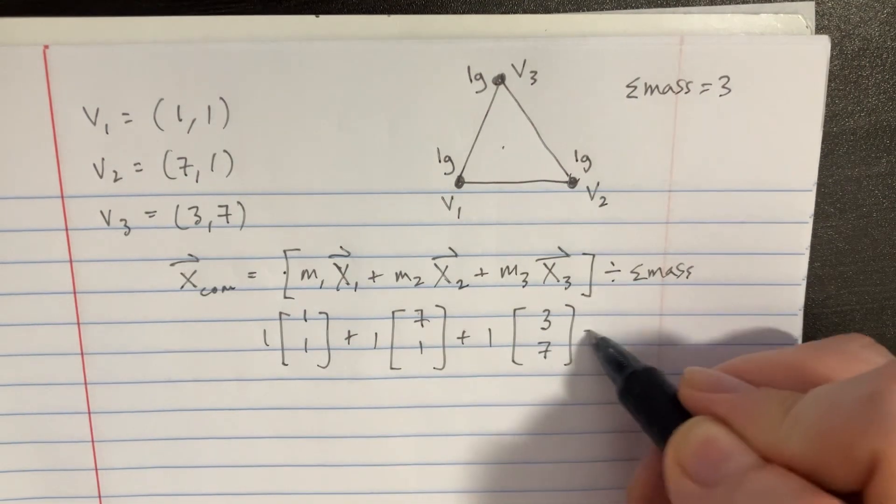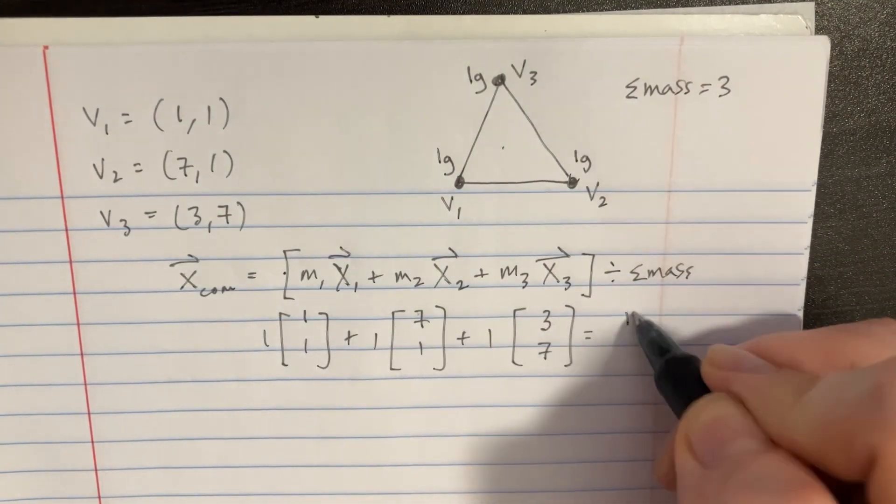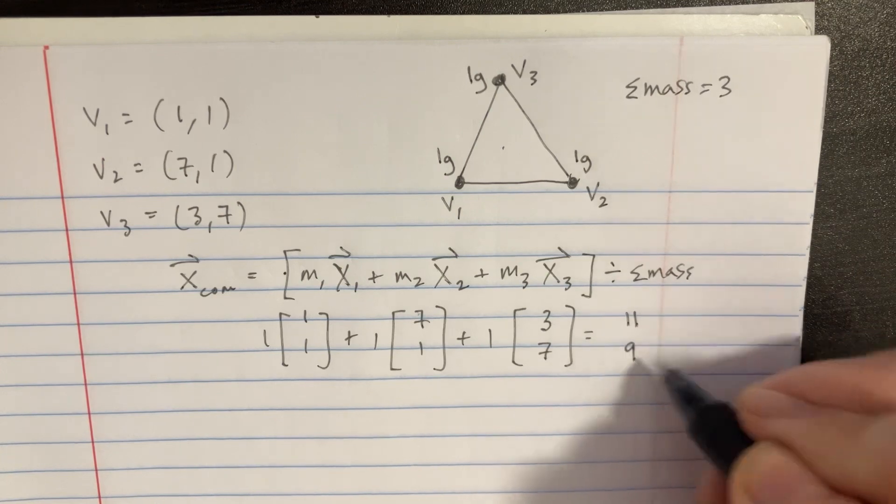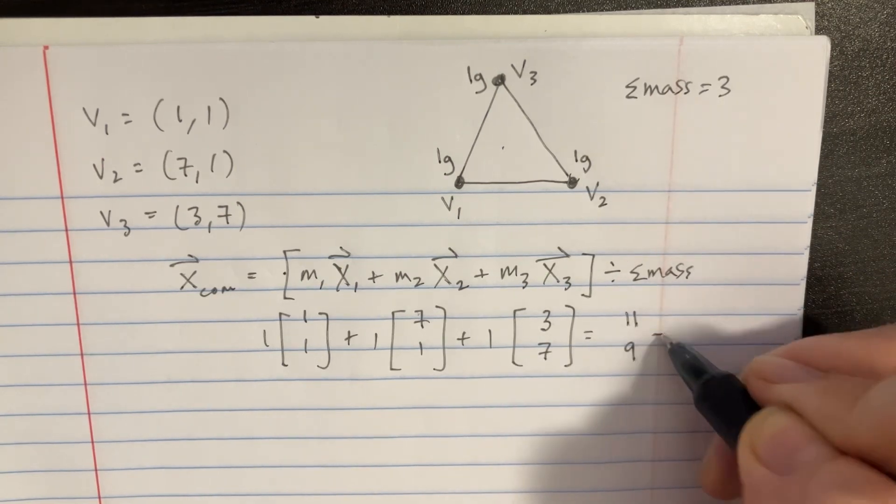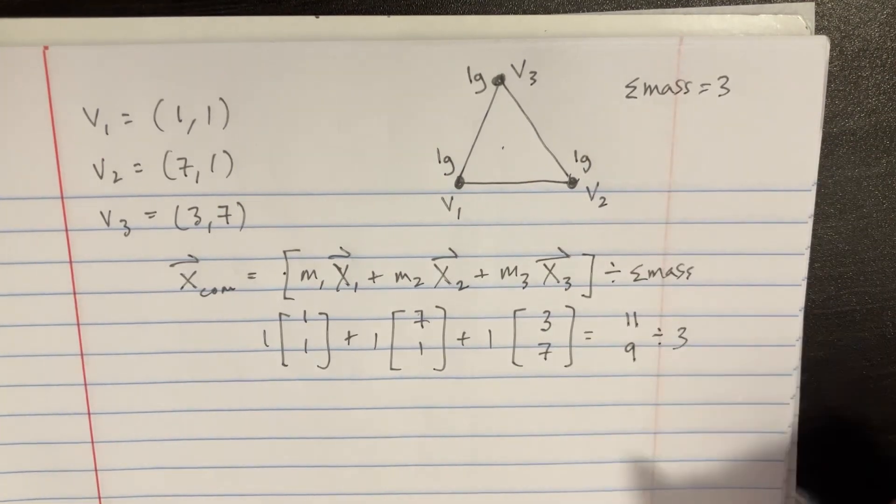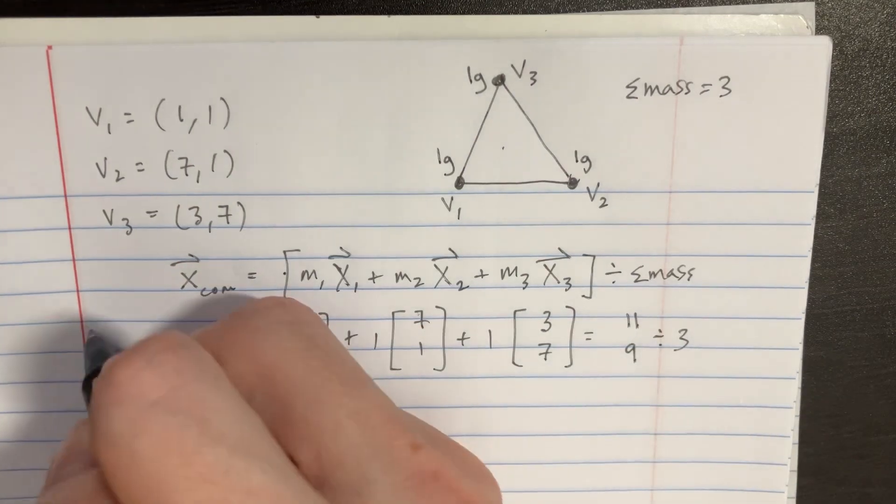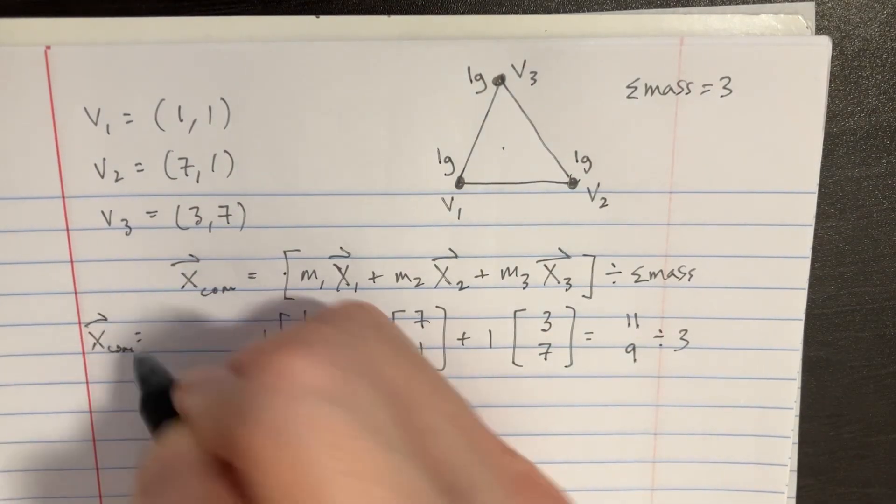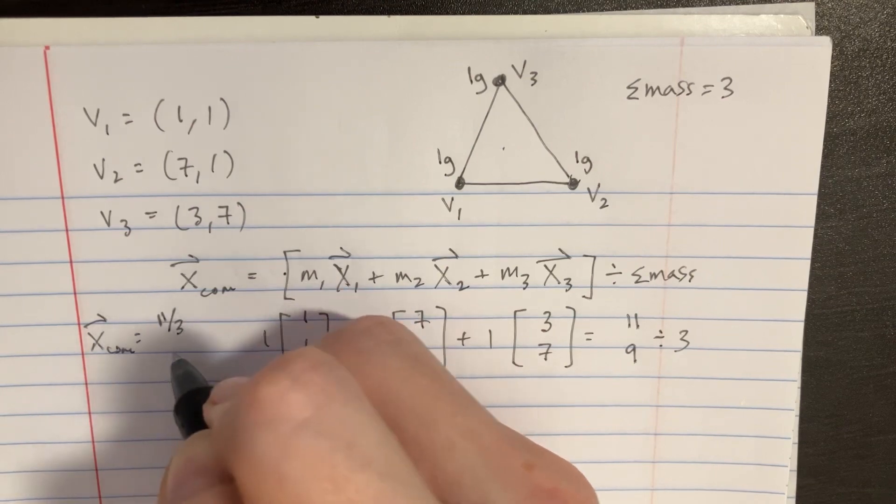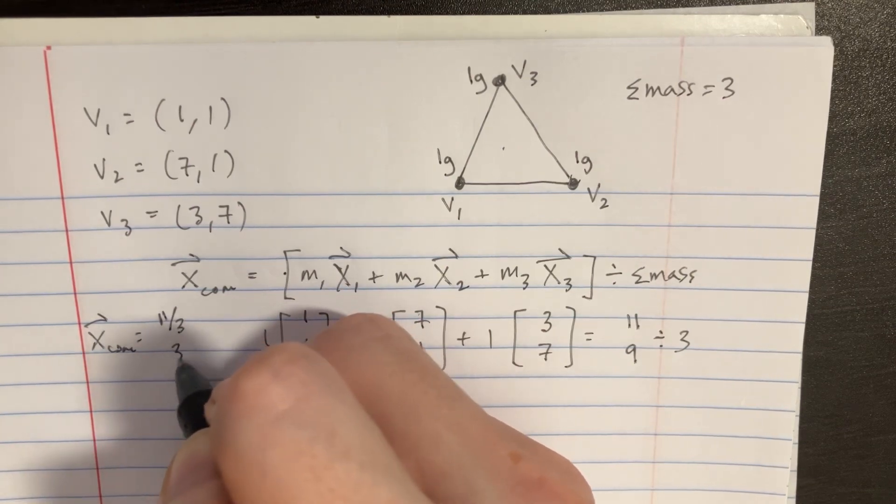So this would simply be equal to 11 on top and then 9 on the bottom. And then that's what we divide by 3. So we can figure out that the x_com for this initial thing is just going to be 11 over 3, and then the next coordinate would be 3.